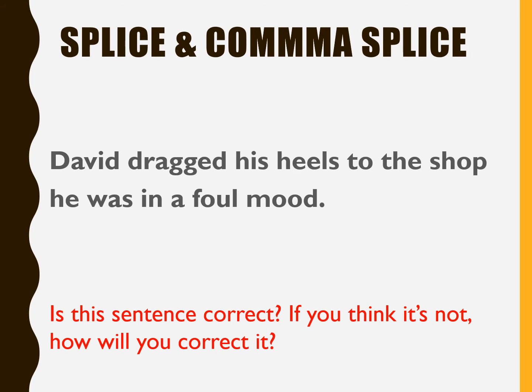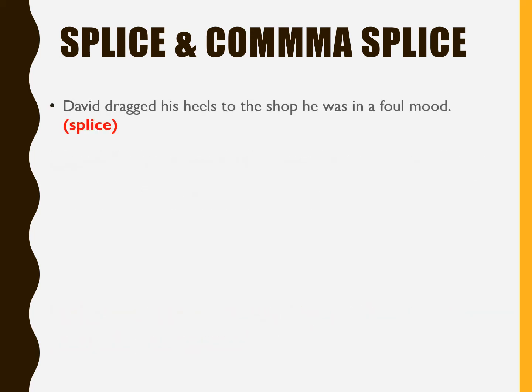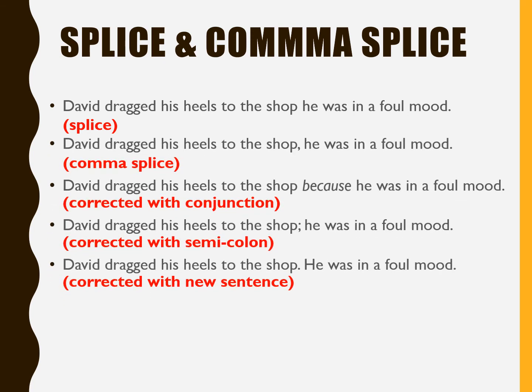Now let's think about the splice and the comma splice. Take this sentence: 'David dragged his heels to the shop he was in a foul mood.' Is that correct? It's not — it's called a splice mistake. Adding a comma between the two clauses would also be wrong — that's a comma splice. The correct options are: a conjunction, a semicolon, or a full stop.